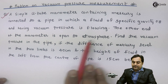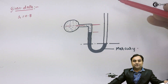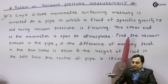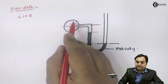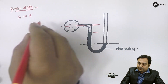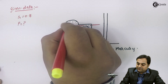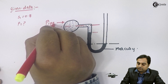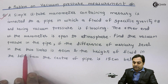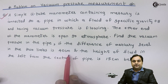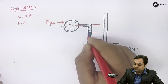The other end of the manometer is open to atmosphere — I have kept this end open to atmosphere. We need to find the vacuum pressure inside the pipeline, which I'll denote as P. The difference of mercury level in the two limbs is 40 centimeters.